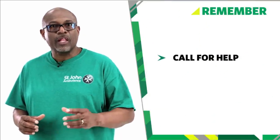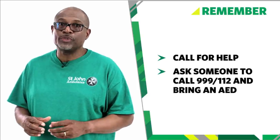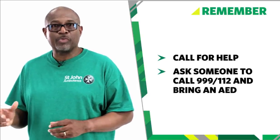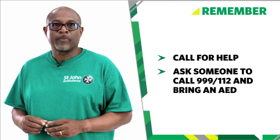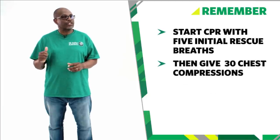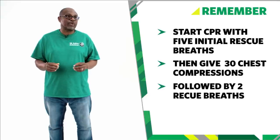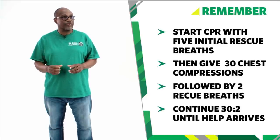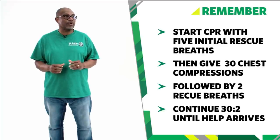Remember: if you come across a child that is unresponsive and not breathing normally, call for help. Tell a helper to call 999 or 112 straight away and ask them to bring an AED. Give 5 initial rescue breaths, then 30 chest compressions followed by 2 rescue breaths. Continue giving 30 chest compressions and 2 rescue breaths until help arrives or the child starts to breathe. And that's how we perform CPR on a child.